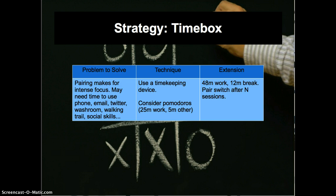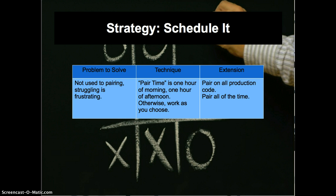How about using a timekeeping device? Work 25 minutes, take a five-minute break — that's a Pomodoro. Alternatively, there's a website dedicated to the power of 48 minutes, in which the author says that by working 48 minutes and taking a 12-minute break, he's able to reach flow more often and get work done more quickly. When you're new to pairing, all day long is just too much.